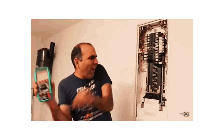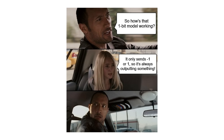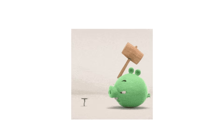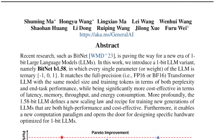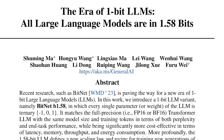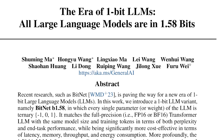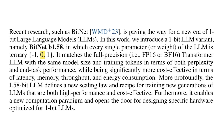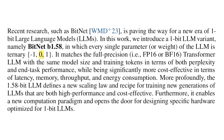But this pure 1-bit setup has a major flaw. Even though it can represent 1 and negative 1, it is mathematically stuck at always providing signals. And this is not great because sometimes dead signals are just as important. So to fix this problem, the same researchers introduced BitNet B1.58 four months later. In addition to 1 and negative 1, they introduced a new state: 0.